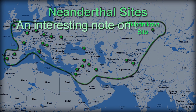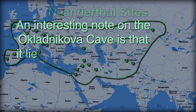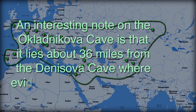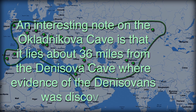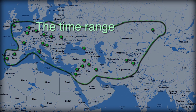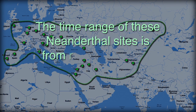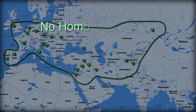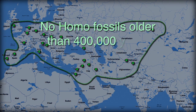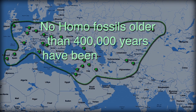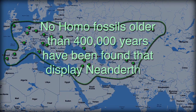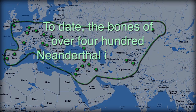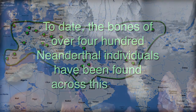An interesting note on the Okladnikova cave is that it lies about 36 miles from the Denisova cave where evidence of the Denisovans was discovered. The time range of these Neanderthal sites is from roughly 230,000 years ago to around 30,000 years ago. No Homo fossils older than 400,000 years have been found that display Neanderthal features. To date, the bones of over 400 Neanderthal individuals have been found across this range.